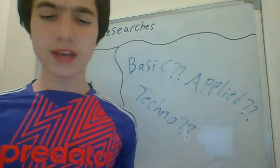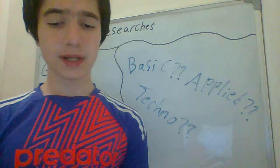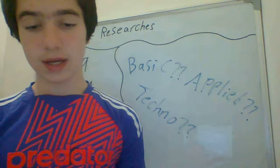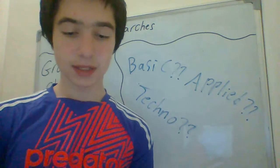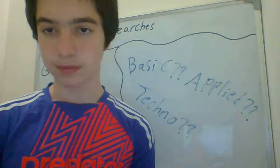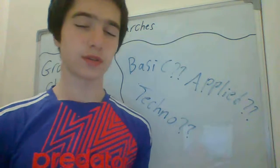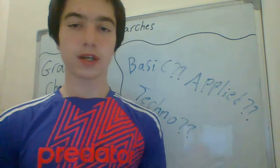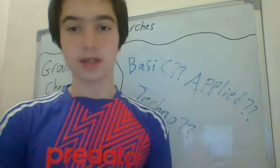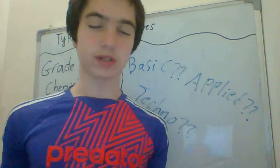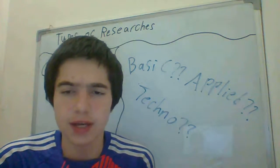Question five: To find a safer chemical for industrial purposes, a scientist is working with chemicals that do not cause depletion of ozone in the atmosphere. This is an example of A — applied research, B — basic research, C — technological development, or D — none of the above. The answer is A, applied research, because the scientist is trying to solve a problem. That's all for today's lesson and I hope it was useful.